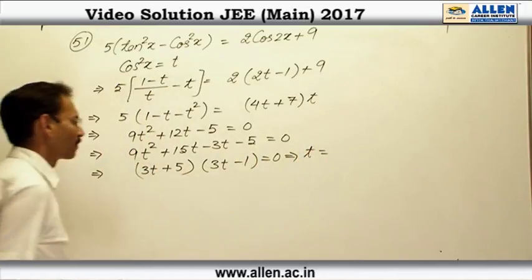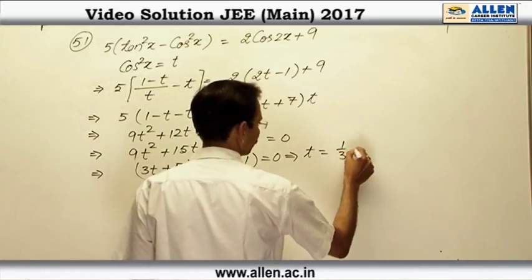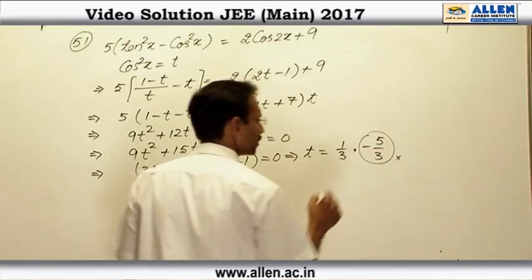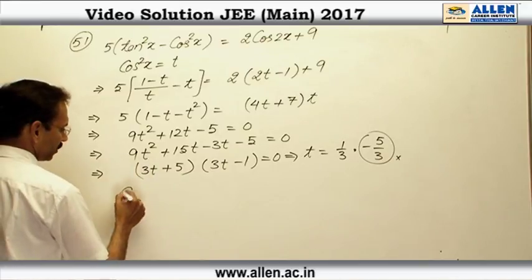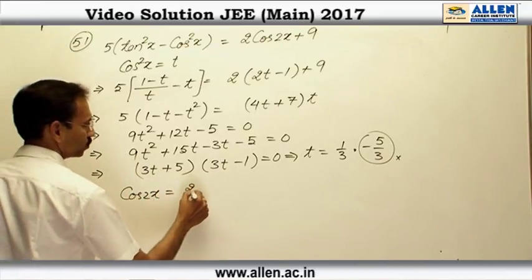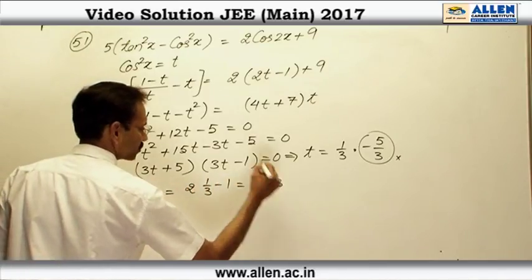So t is either 1 by 3 or minus 5 by 3. But we know it is not possible to be minus 5 by 3. That is why we will consider cos square x as 1 by 3 and we will find out the value of cos 2x which is 2 cos square x minus 1 or minus 1 by 3.